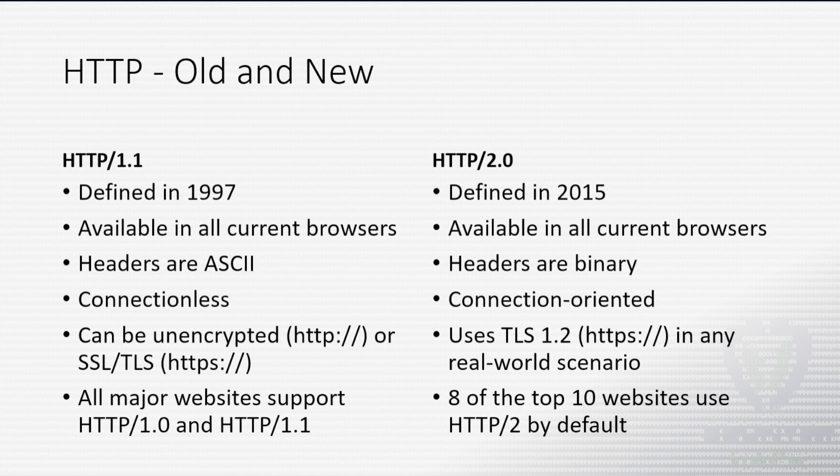With 1.1, our headers are all ASCII. They're all human-readable. Each header is a line of ASCII text, where with 2.0, it's all bytecodes — it's binary. So we're not able to read it anymore, but it's computers talking to computers, so they can be a little more compact in how they communicate. That saves a little bit of overhead there.